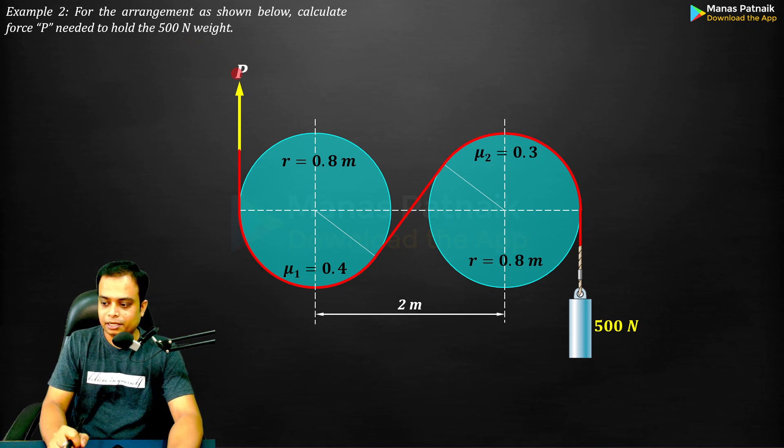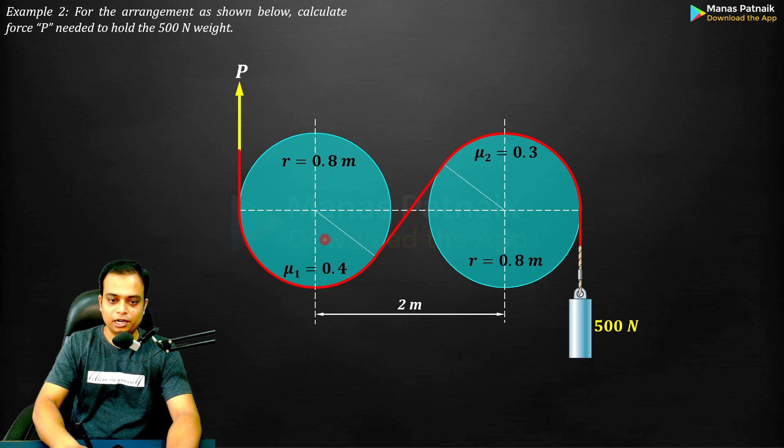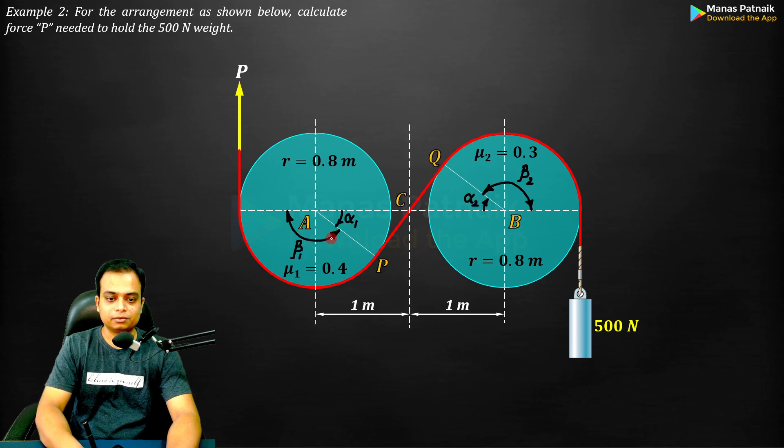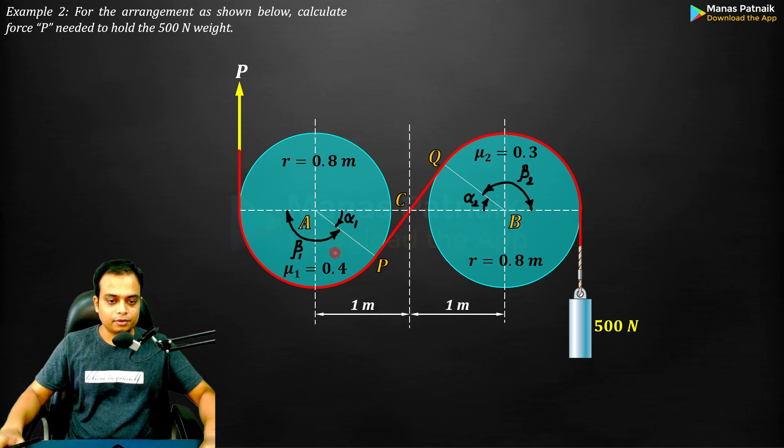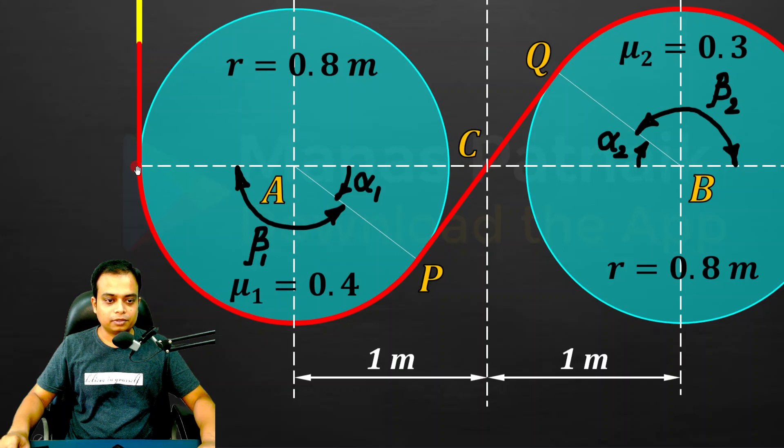Before getting into the mechanics, let me address the geometry first. Let me mark these two centers of the drum as A and B. This is the angle of lap - the contact of the belt starts here and ends at P, so beta 1 and beta 2.